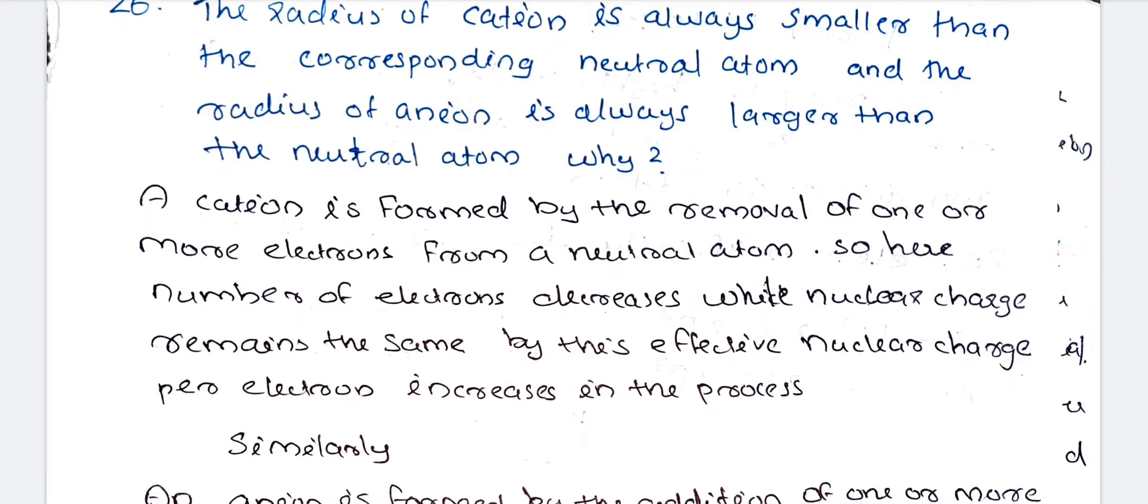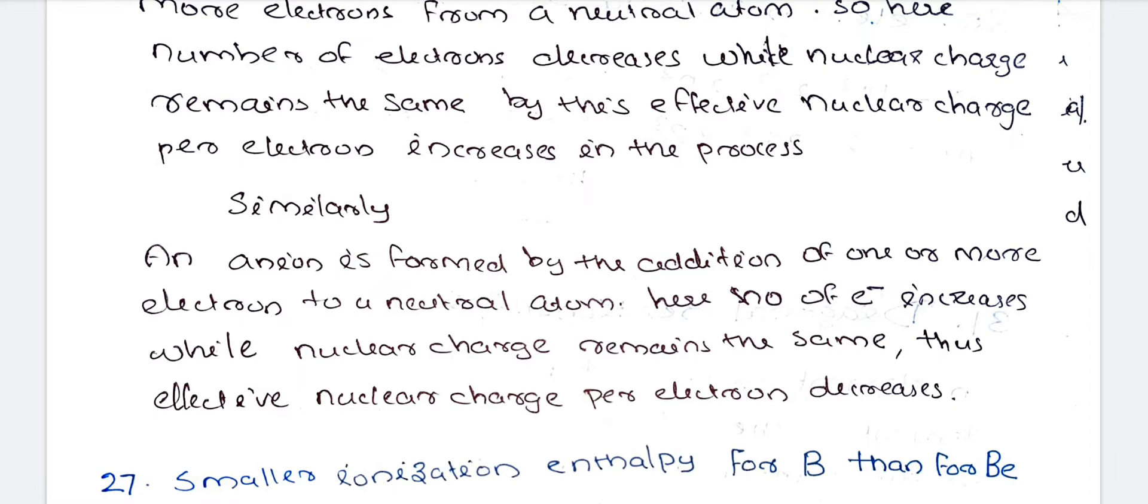Effective nuclear charge per electron increases in the process. When an anion is formed by the addition of electrons, the nuclear charge remains the same but the electron-electron repulsion increases, thus the effective nuclear charge per electron decreases and the size increases.